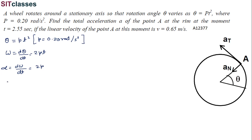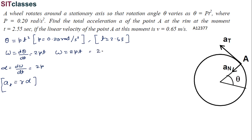From here we can write that tangential acceleration a_t = r·alpha. Now, omega = 2pt. Substituting p = 0.2 and t = 2.55 seconds, omega = 2 × 0.2 × 2.55, which gives omega = 0.4 × 2.55.